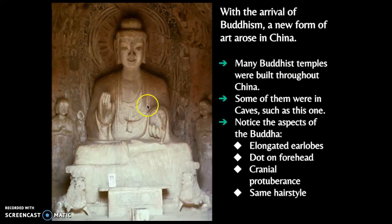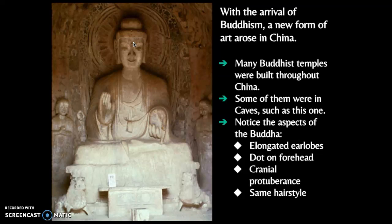Regardless of which country Buddhism spreads to, the art and sculptures look similar, because similar to Hinduism the statues are symbolic. We see elongated earlobes to show that Siddhartha Gautama came from wealth — jewels were so heavy in his ears that they dragged his earlobes down, but now they're empty. We often see a divot or bump in the middle of the forehead — a cranial protuberance — symbolizing the third eye, to focus through meditation and gain enlightenment.